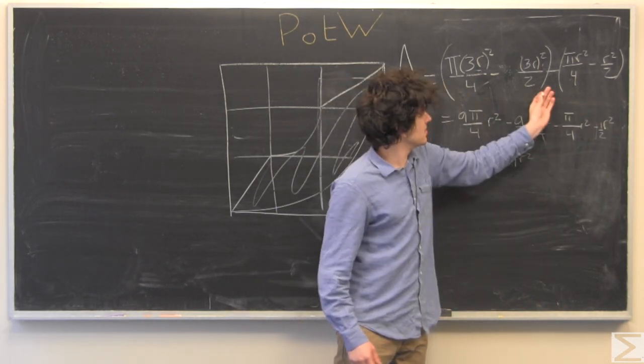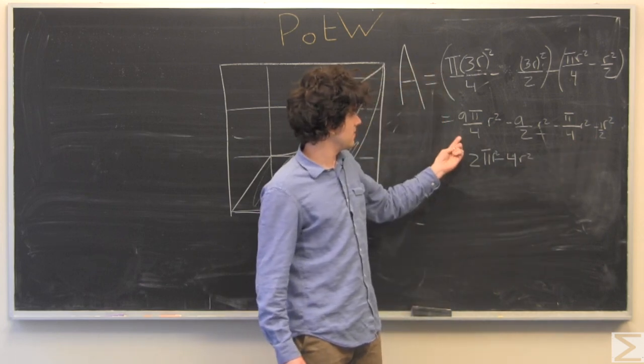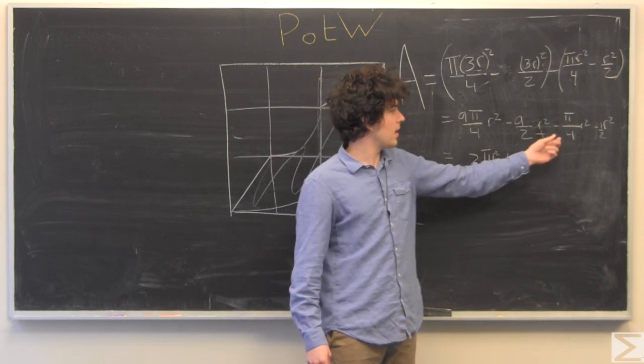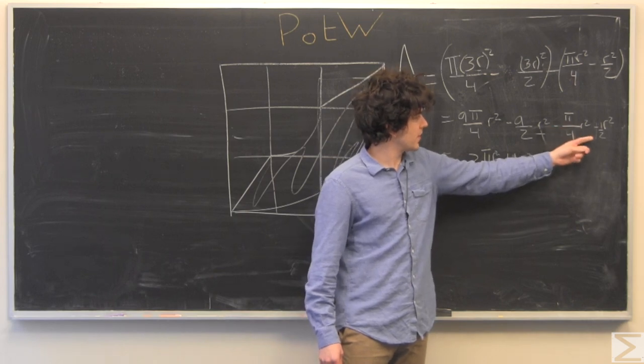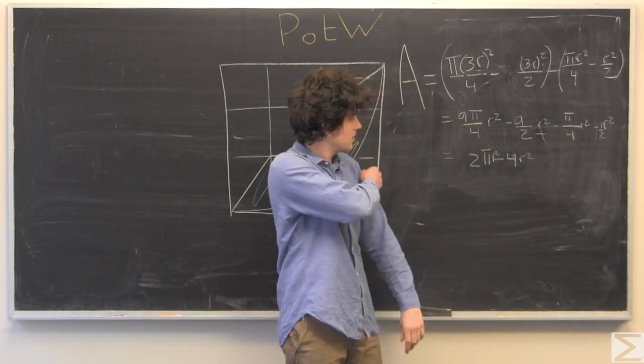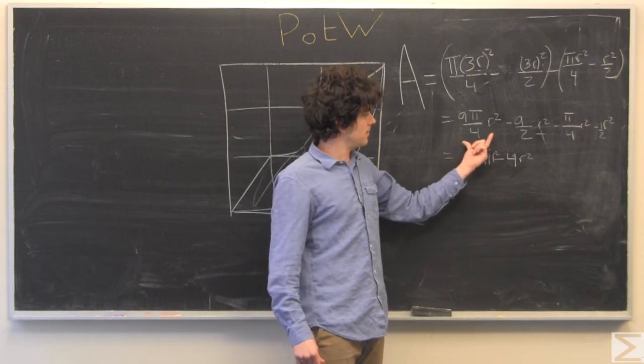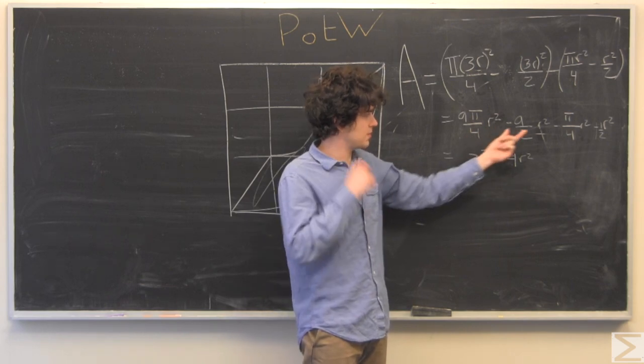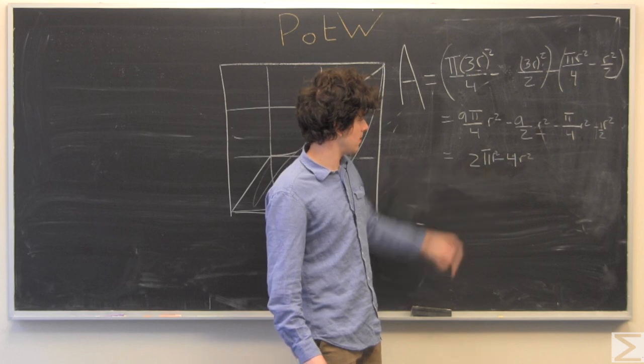This minus is going to distribute and turn this into a plus. So we have 9π/4 r squared minus 9/2 r squared minus π/4 r squared plus 1/2 r squared. We're going to combine the π r squared terms and the r squared terms. So we have 2π r squared minus four.